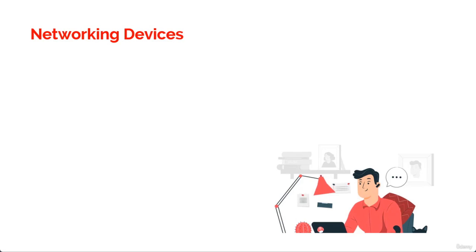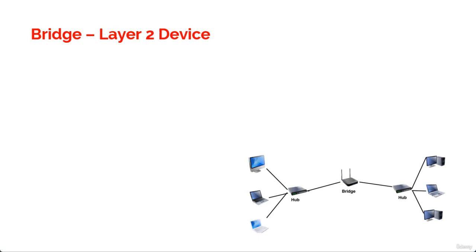In the last lecture we talked about a hub which basically connects different network segments together, but I also told you that hub is a non-intelligent device which means it transfers packets to all other devices. In this lecture we are going to talk about a bridge.